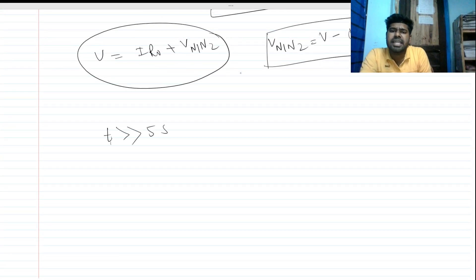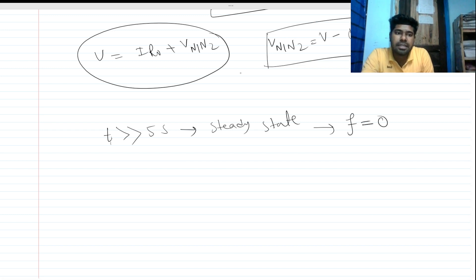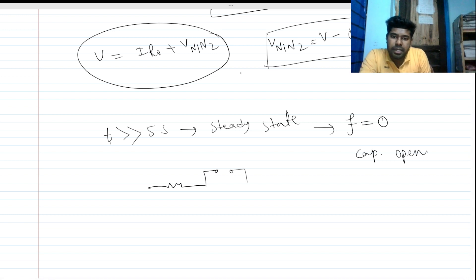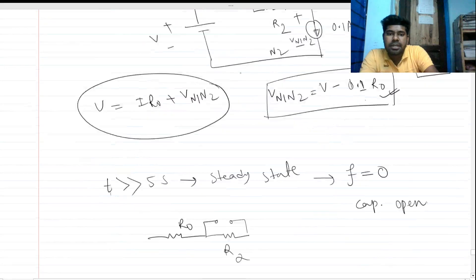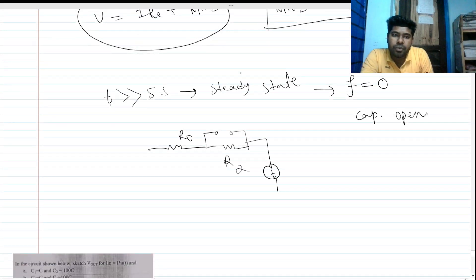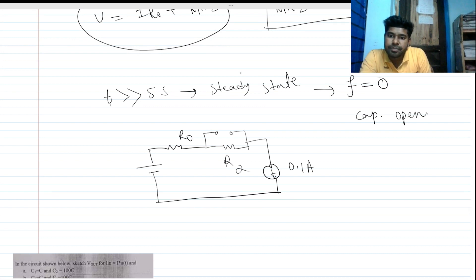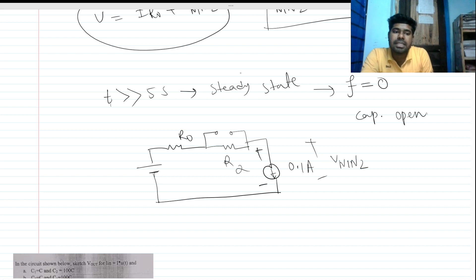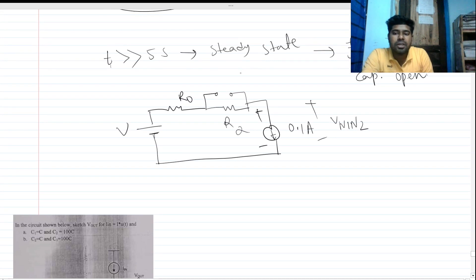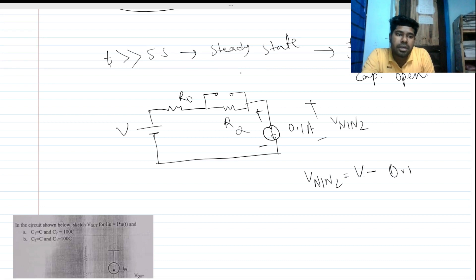Now taking t much greater than 5 seconds — the steady state. At steady state the circuit sees a frequency of zero, and the capacitor is open circuit. There is R_naught, the capacitor is open circuit, and there is a constant current source of 0.1 amps. Applying KCL or KVL, V_n1n2 equals V minus 0.1 times (R_naught plus R2).